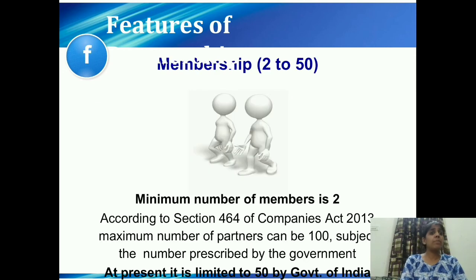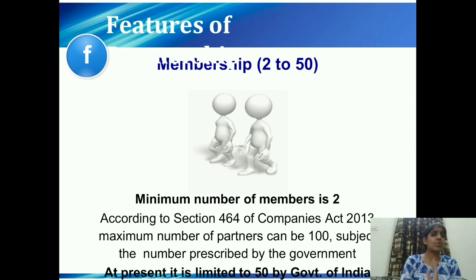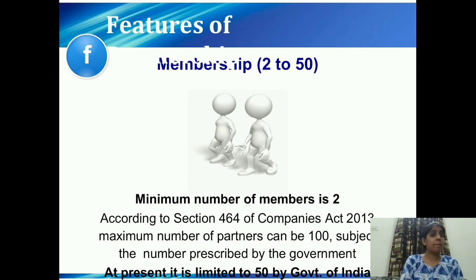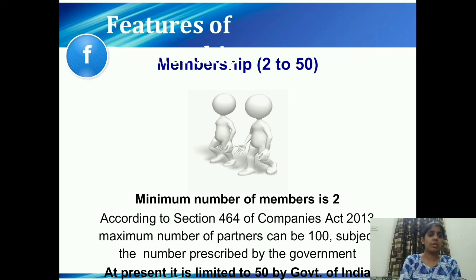The sixth feature is membership — the minimum number of members required is two. According to Section 464 of the Companies Act 2013, the maximum number of partners can be 100, subject to what is prescribed by the government. At present it is limited to 50 by the government, but the maximum can be 100 for some businesses subject to government permission. So minimum is 2, maximum is currently 50, but can go up to 100.